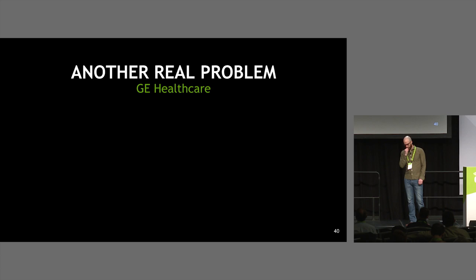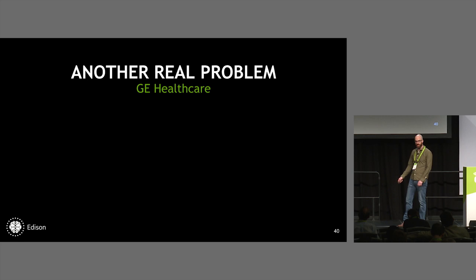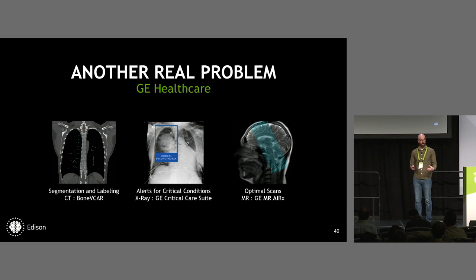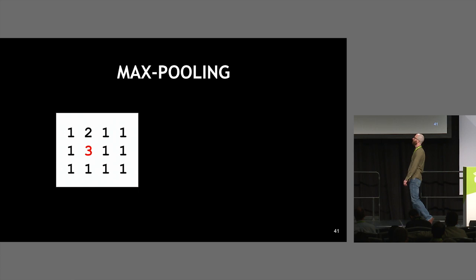GE Healthcare contacted us needing to train deep learning models deterministically on their Edison platform — training on 2D data like X-rays and 3D data from CT and MR machines. Bit-accurate determinism is important not only for healthcare compliance but also for developing complex models and hyperparameter tuning. They gave me a boiled-down model with max pooling, 3D max pooling, and 3D convolutions, and I used the debug tool to isolate the next source of non-determinism: max pooling.